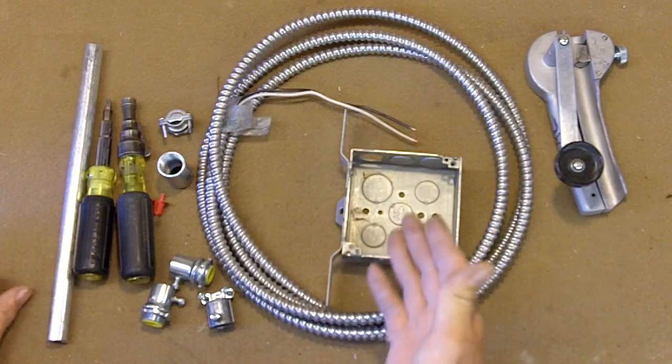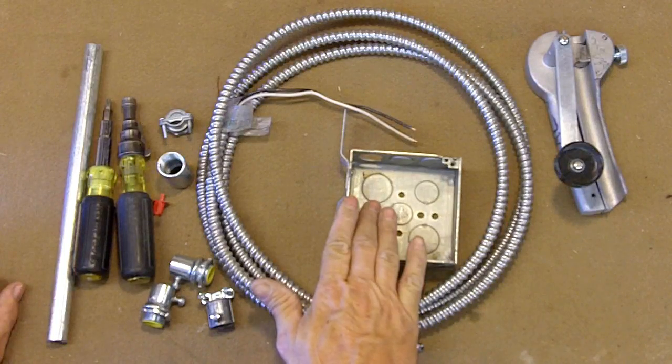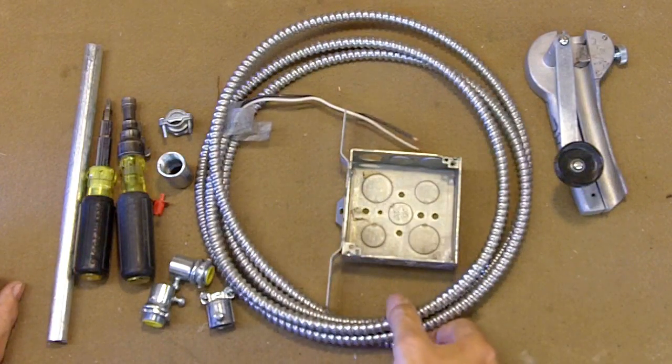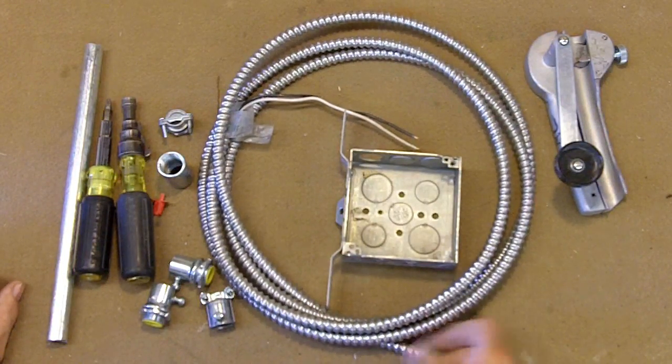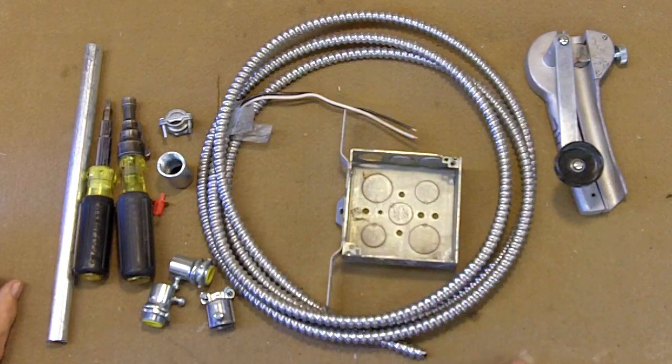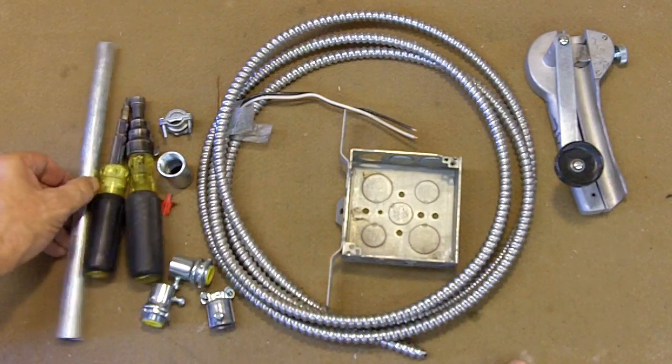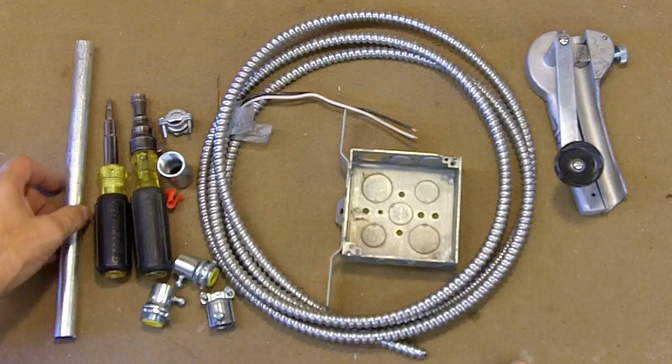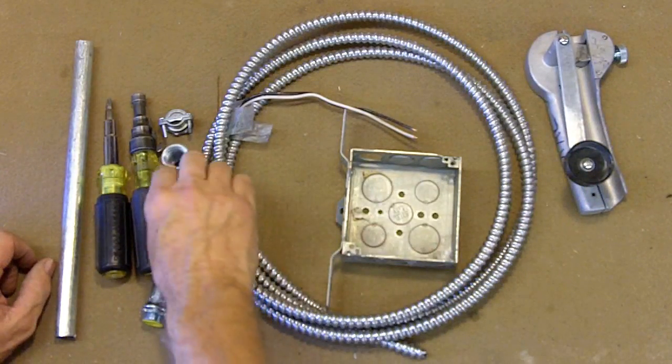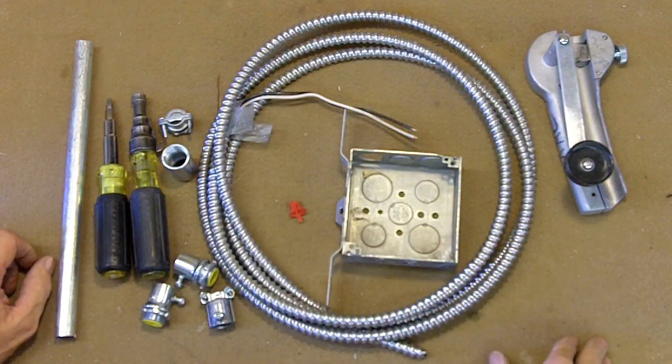Basically you're going to have your box which is probably mounted up against a stud and in this case I've got some 12.2 MC here. Got just a short piece of pipe just for the demonstration. Got my MC splitter, your anti-short bushing,